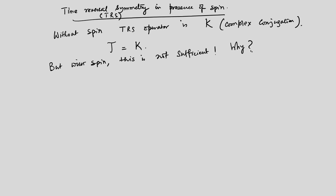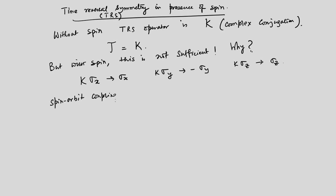The reason it is not sufficient is that K acting on σx gives σx — it does not change its sign. K acting on σy gives -σy because σy is complex. K acting on σz gives σz without changing its sign. But we want all spin components to change sign, because under time reversal L goes to -L and S goes to -S, so that the spin-orbit coupling L·S has no net sign change.